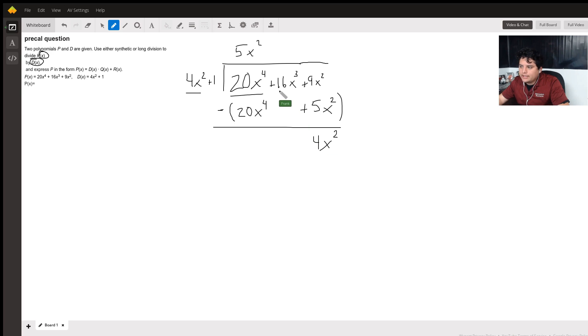However, since I didn't subtract anything from this 16x cubed, I just bring it down. 16x cubed plus 4x squared. Now you move on to the next step, which is asking yourself again the same question.